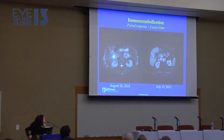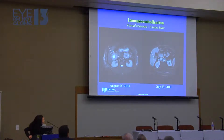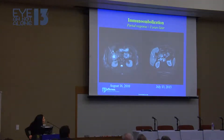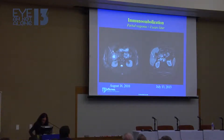This is a patient who is very dear to me, who started undergoing immunoembolization in 2010. You can see here an MRI of her liver — she has a pretty large right lobe tumor. And this is her this summer, and you can see that it has decreased in size substantially.